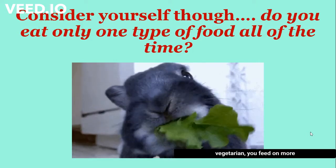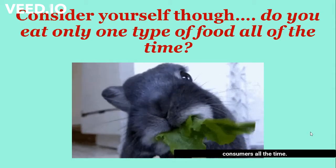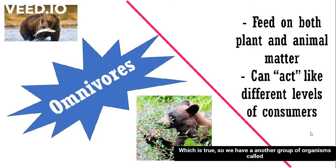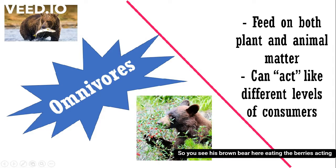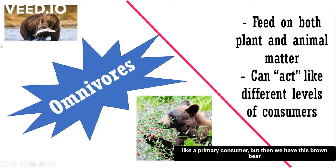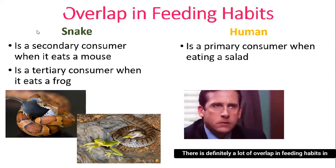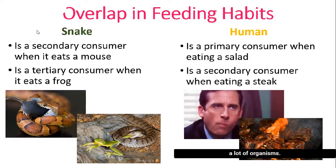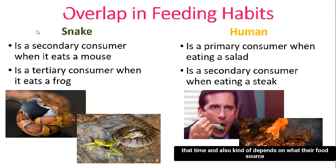You might be wondering: if you're not strictly a vegetarian, you're feeding at different levels of consumers all the time, which is true. So we have another group called omnivores, based on their feeding habits — they eat both plant and animal material. For example, a brown bear eating berries is acting like a primary consumer, but that same bear eating fish may be acting like a secondary or even tertiary consumer. There's definitely a lot of overlap in feeding habits, depending on what they're encountering and what their food source ate prior.